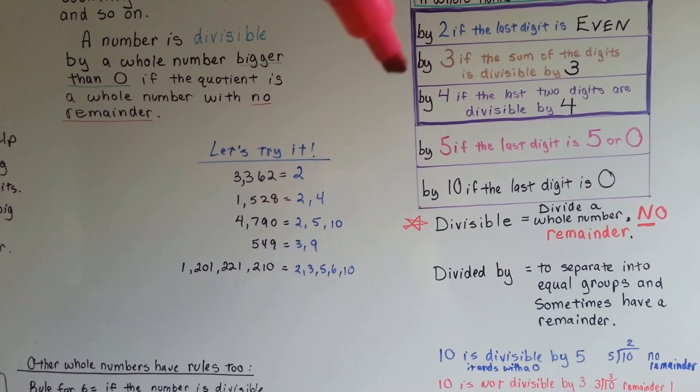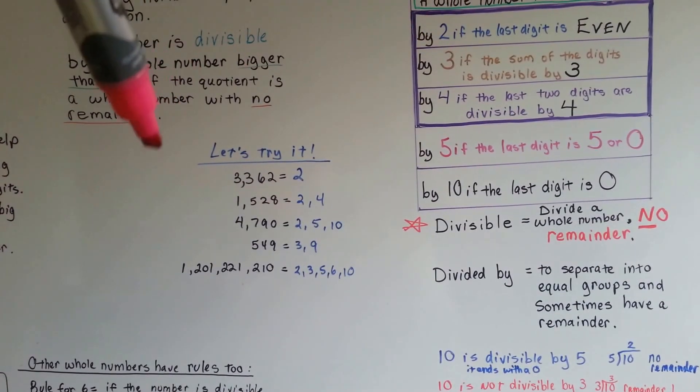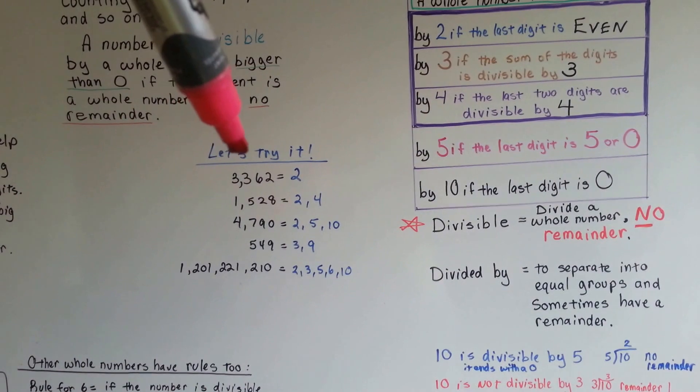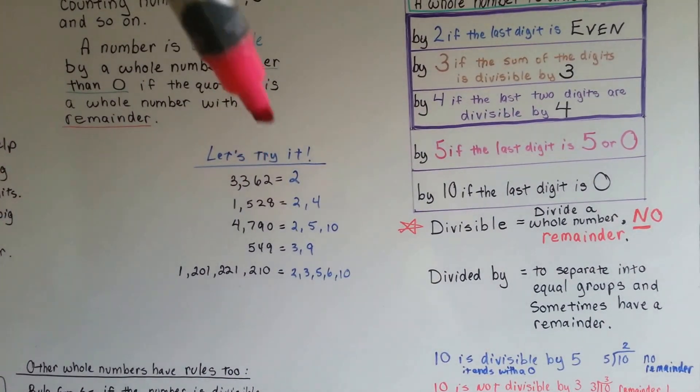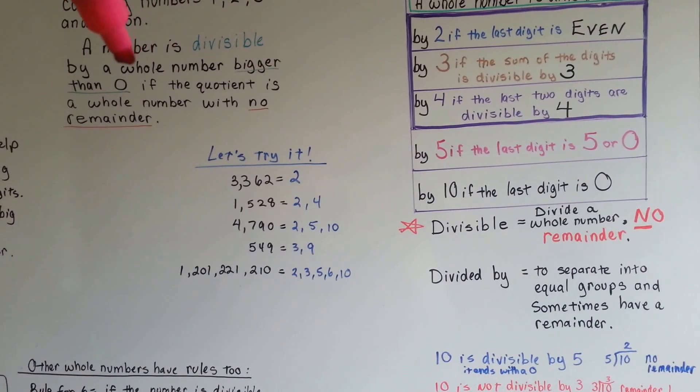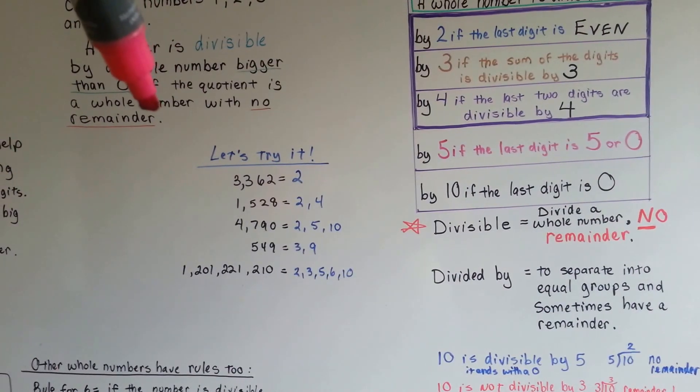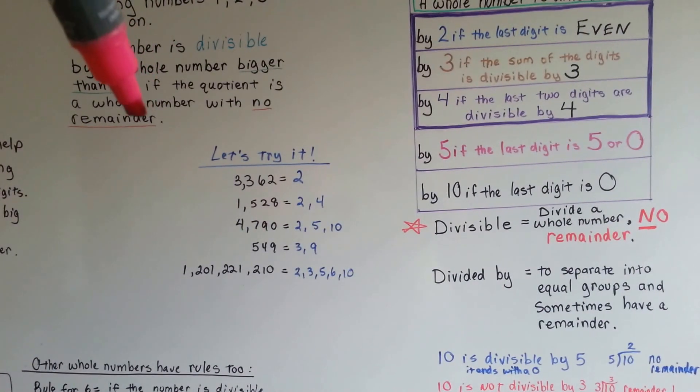When we try getting the sum of the digits, 3 and 3 is 6, and another 6 is 12, and the 2 is 14. No, the sum is not divisible by 3. 14 is not divisible by 3. 15 would have been, but not 14.